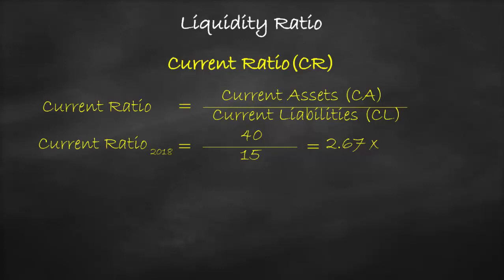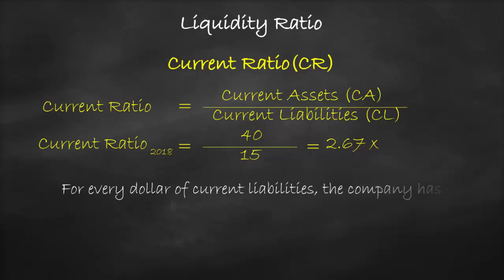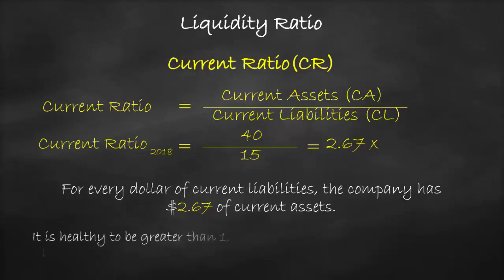The unit of the current ratio is times. This means that for every dollar of current liabilities, the company has $2.67 of current assets. It is healthy for the ratio to be greater than 1, but less than 1 means that you will have short-term liquidity problems.